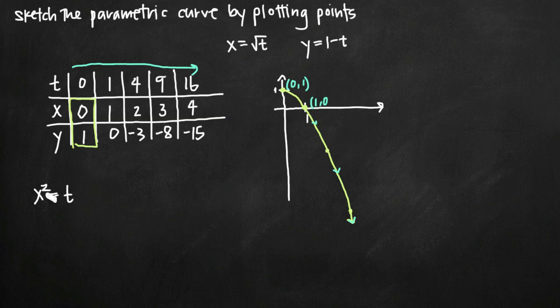Now we have a value for t that we can plug into this equation for y. So this equation for y then becomes y equals 1 minus x squared when we plug this x squared value that we found for t into this variable here, t.